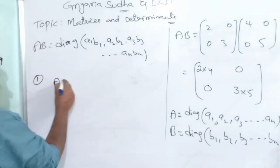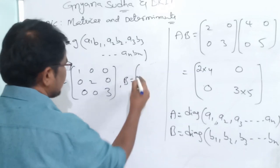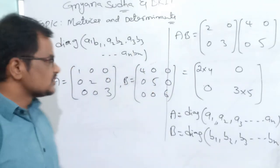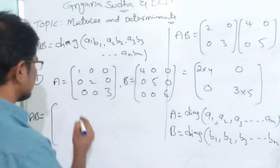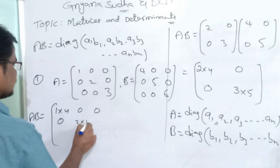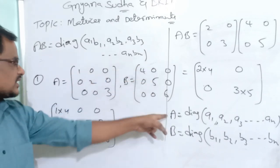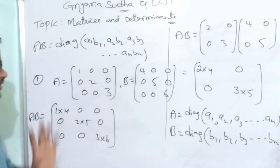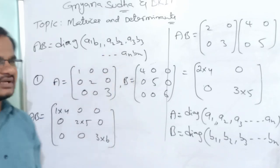For example, if A = diag(1,2,3) and B = diag(4,5,6), then AB = diag(1×4, 2×5, 3×6) = diag(4,10,18). You can verify: first row with first column gives 4, off-diagonal entries are 0, second row with second column gives 2×5=10, third row with third column gives 3×6=18.